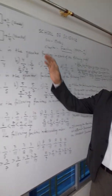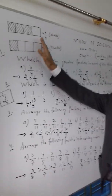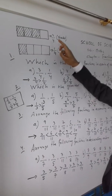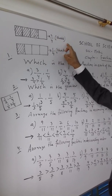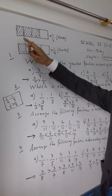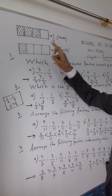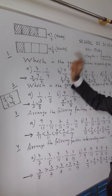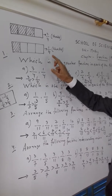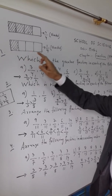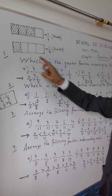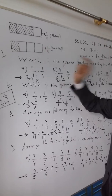Now just see this figure. 3 by 4 is shaded — out of 4 parts, 3 parts are shaded, so 3 by 4. Here, out of 4 parts, 1 is shaded, so 1 by 4.